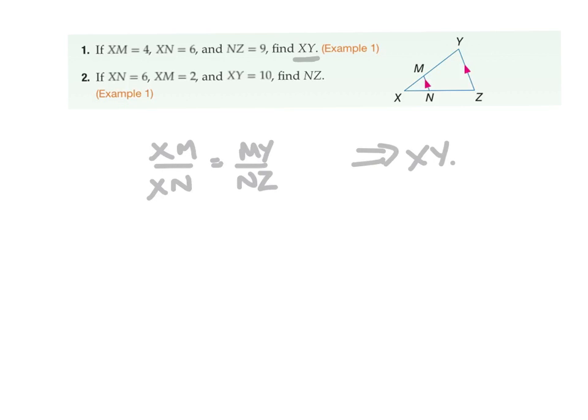Now let's substitute in, you've got 4 over 6 equals, we don't know what MY is, so keep it as MY, and that's 9. Cross-multiply, you've got 6MY and I'm putting that in parentheses because it's actually a distance, and that equals 36, so MY must equal 6.